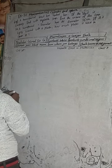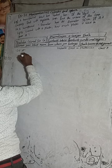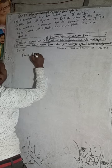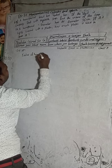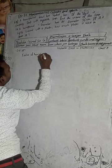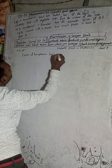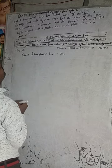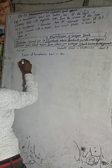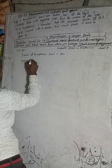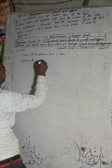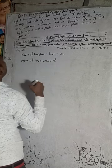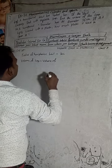So here, the radius of the hemispherical bowl is given as 7 cm. If the bowl is completely filled with vegetable soup, find the volume of soup. So the volume of soup is equal to the volume of the hemispherical bowl.